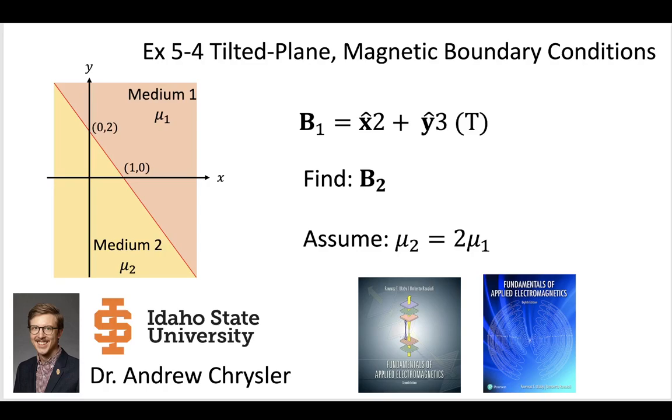In this video I'm going to be covering an example problem of magnetic boundary conditions when we have a tilted plane surface separating two different mediums. So we have a medium one and a medium two and there's this tilted plane in between them.